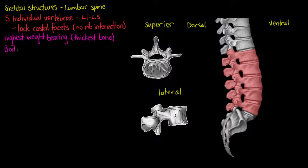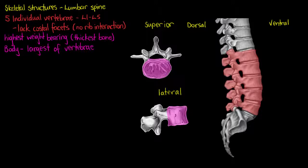Just while we're talking about the weight-bearing capacity of the lumbar spine, I'll point out the body. The body of the lumbar vertebrae here we can see is very large and somewhat kidney-shaped. If we were to compare the bodies of the lumbar vertebrae along with the thoracic and cervical, we'd see that the lumbar is by far the biggest.